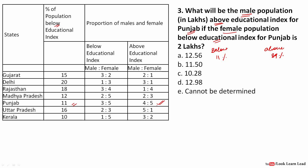Above educational index in Punjab is divided in ratio 4:5, so male is 4/9 of 89 percent of total population x. For the second hint: below educational index (11%) is divided 3:5, female is 5/8. So 5/8 × 11% × x = 2 lakhs. From this we find the value of x.